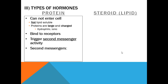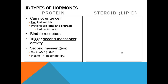Examples of second messengers include cyclic AMP, inositol triphosphate, and calcium ions. Cyclic AMP and IP3 are the two most common second messengers. These are given as examples so that you can grasp the fact that proteins need to activate some kind of messenger inside the cell in order for their message to reach their target.